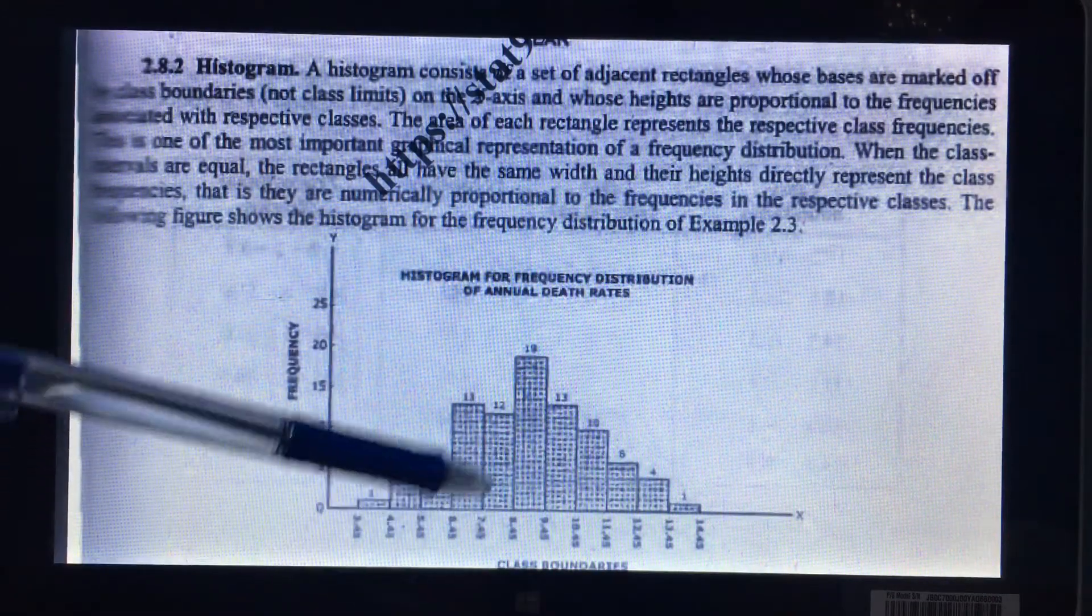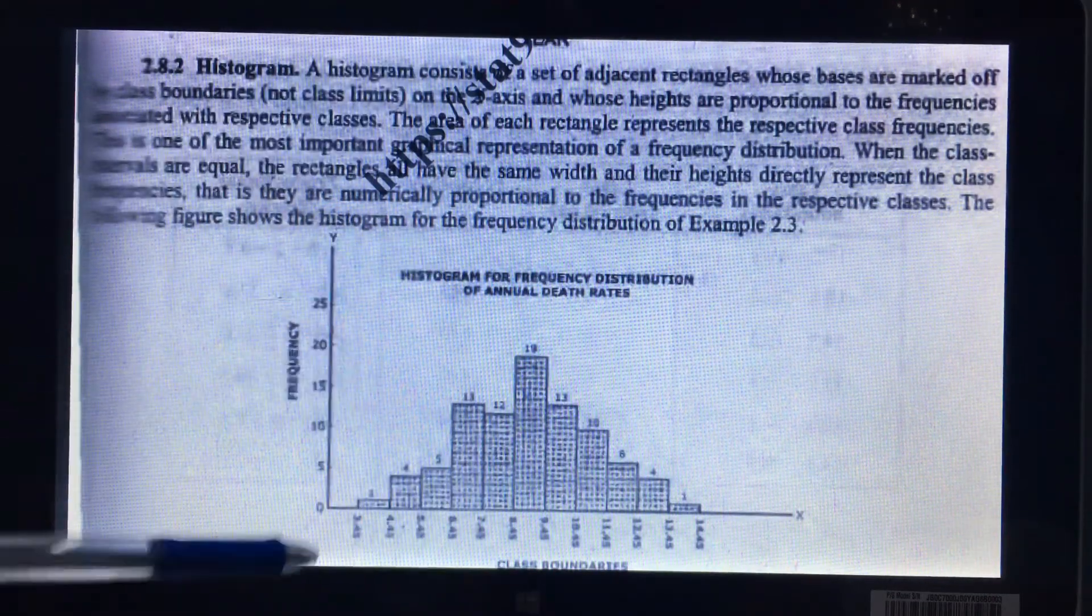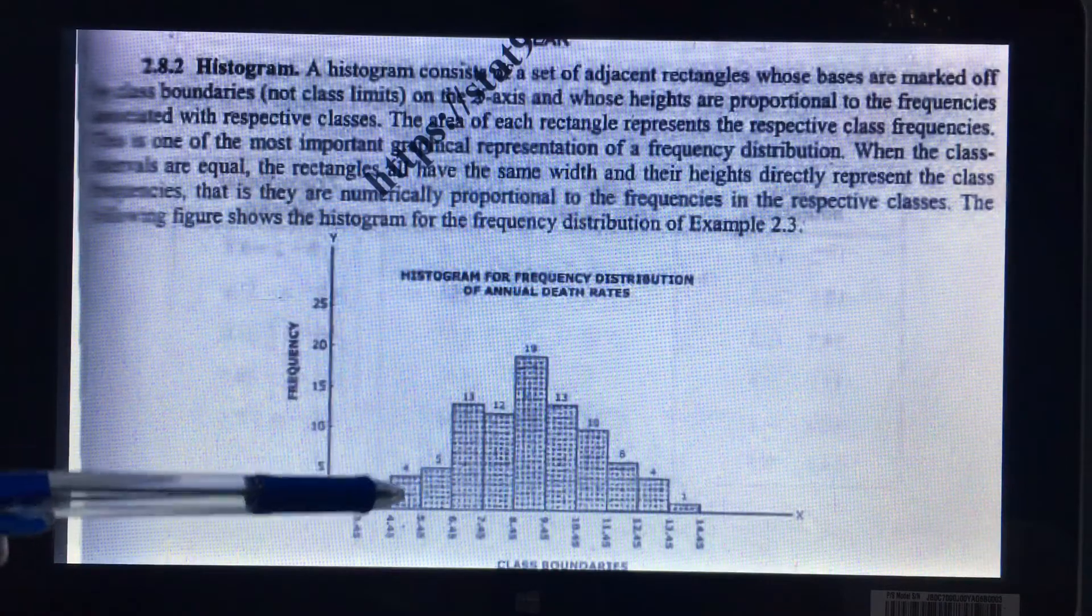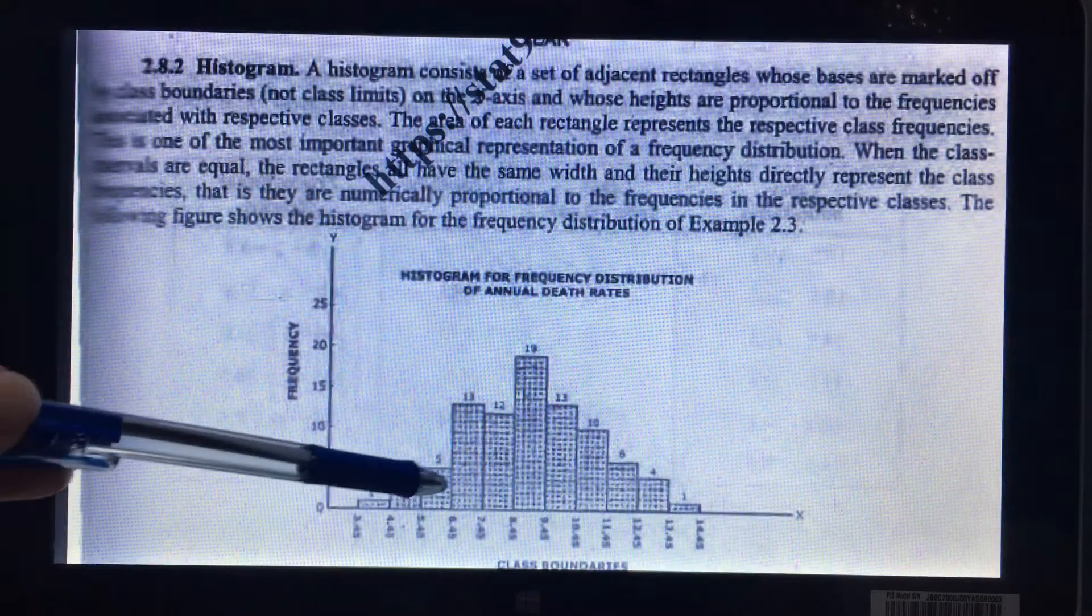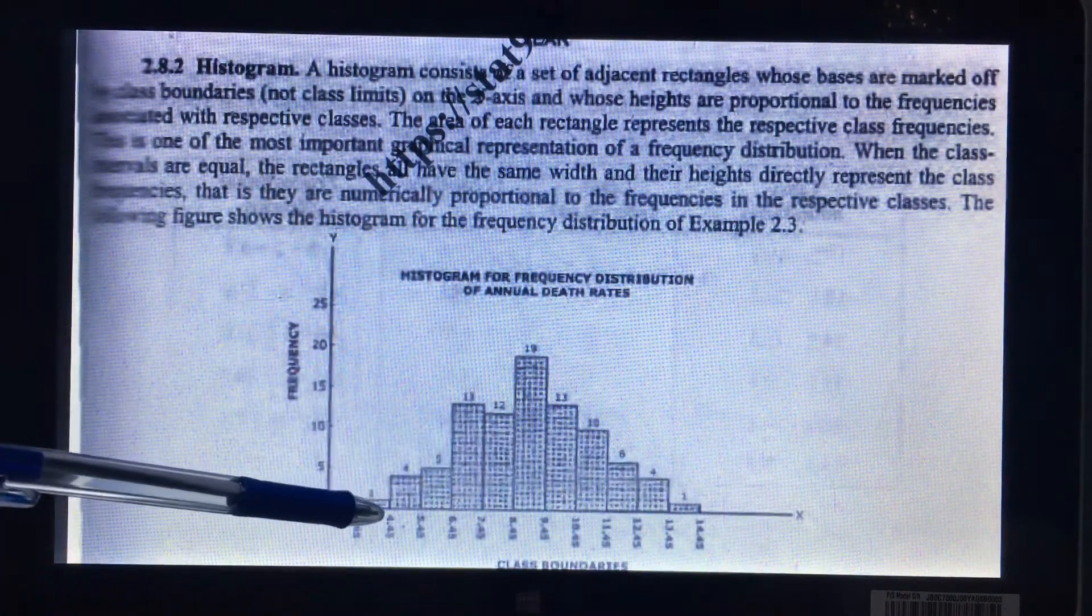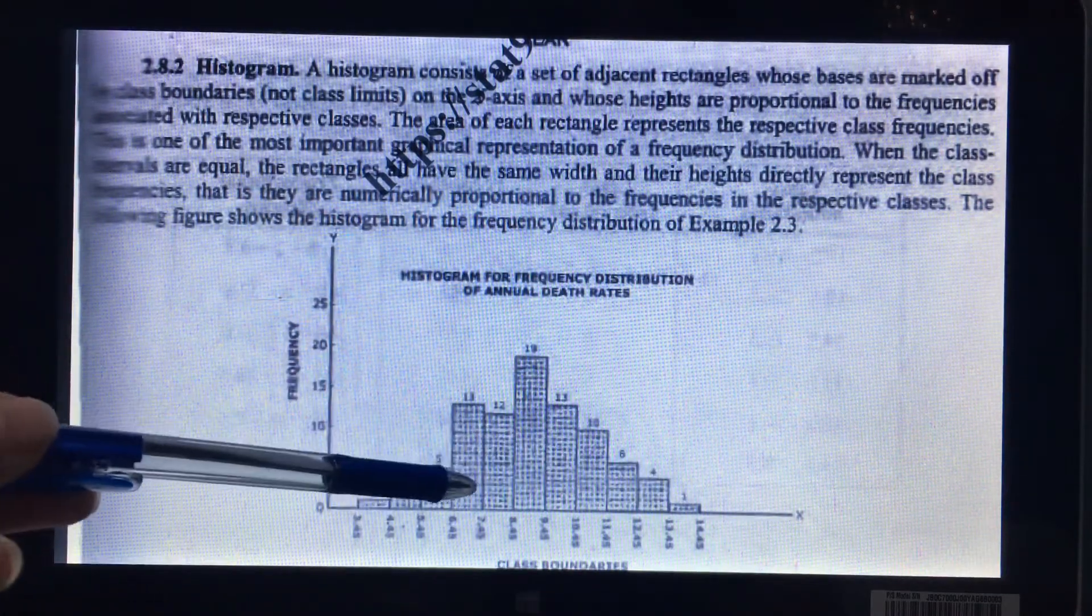Last time we discussed a simple bar chart where we plot some bars and there is spacing between each bar. But here we have rectangles and there is no spacing between these rectangles. These are adjacent rectangles.